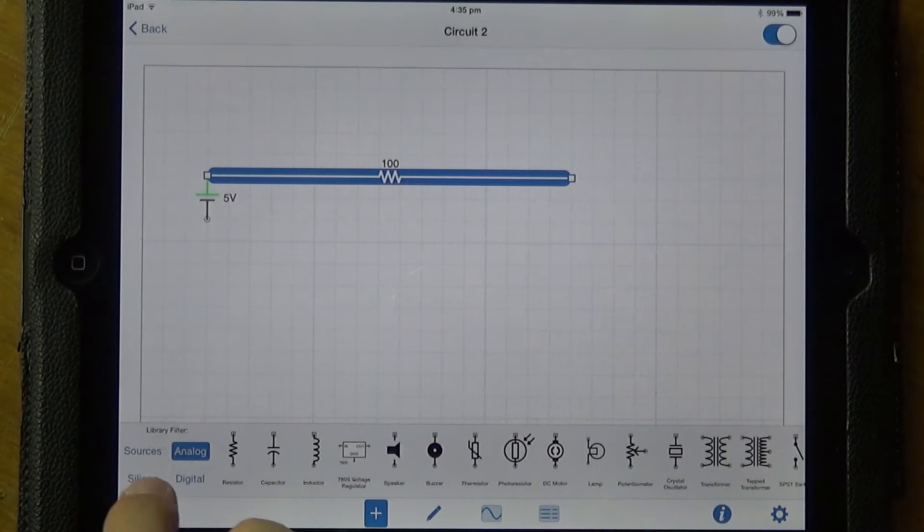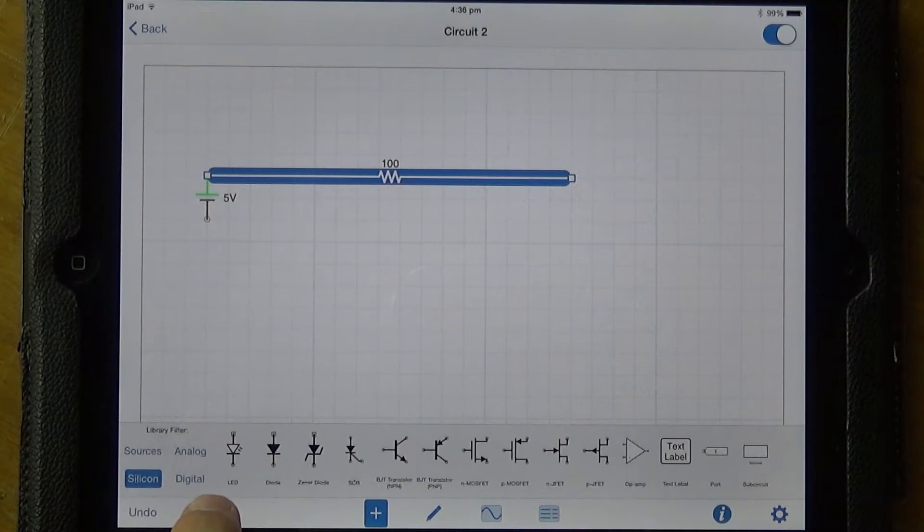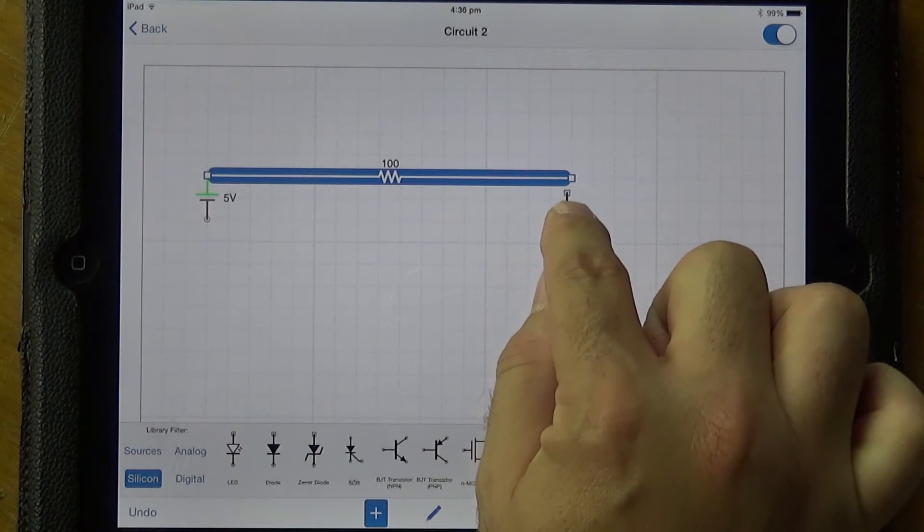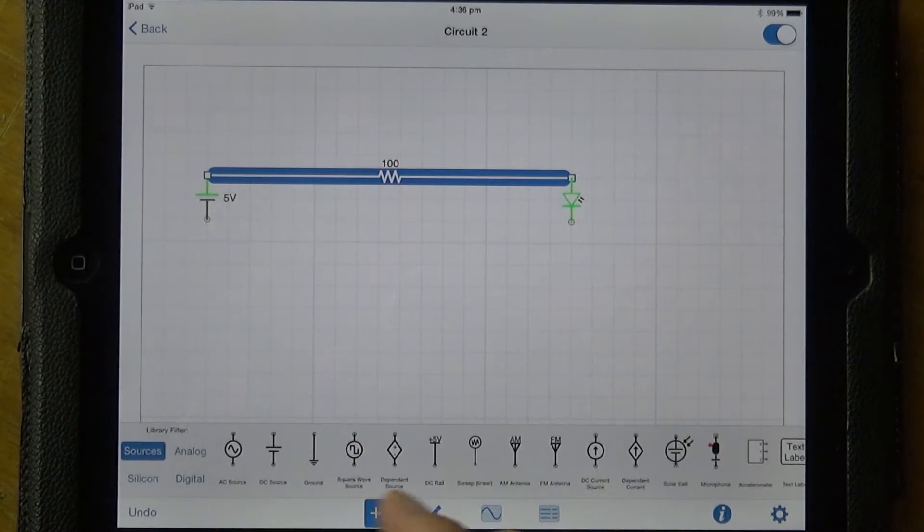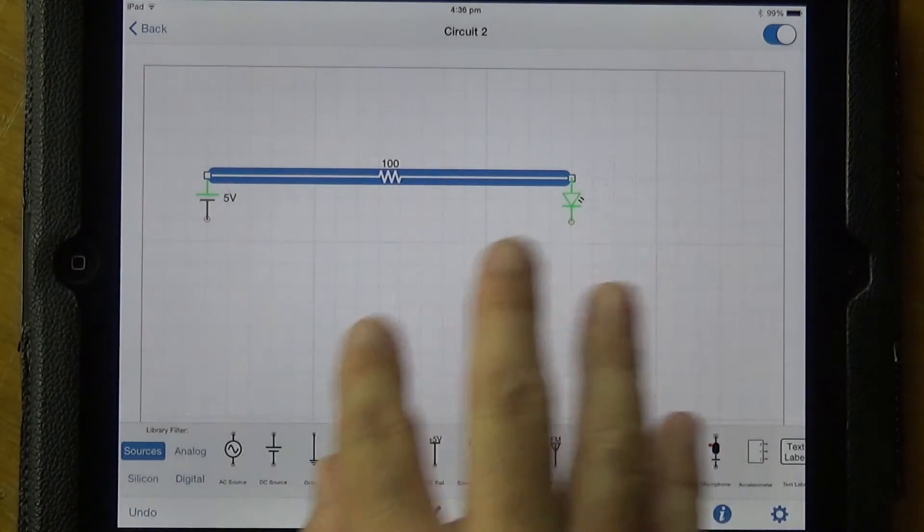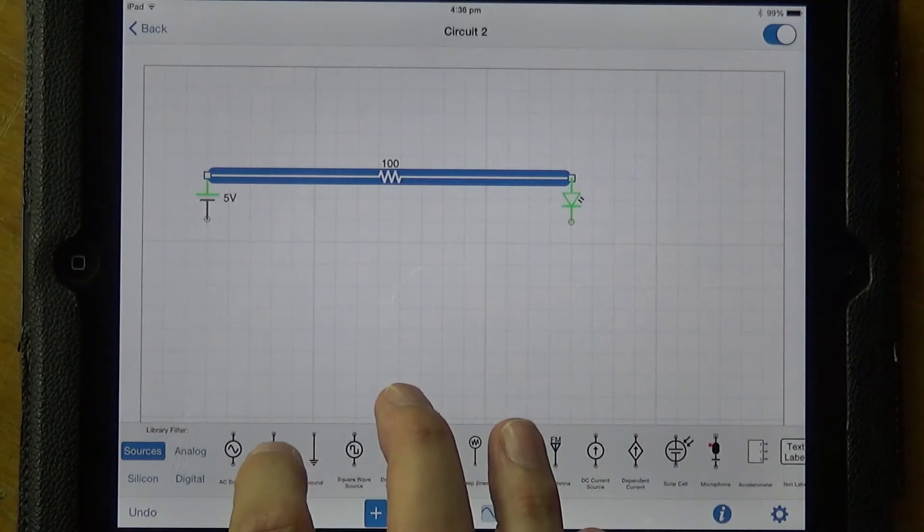Okay, so if we head over to silicon, there's a simple LED, drag that and that'll do. And obviously just to complete a circuit, as if you were laying this out on a breadboard, you need to pull certain things down to ground.